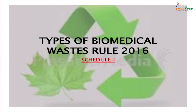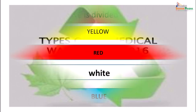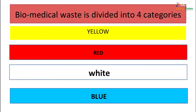Under the 2016 rules, Schedule 1, the types of biomedical waste are different. Biomedical waste is now divided into 4 categories: yellow, red, white and blue.